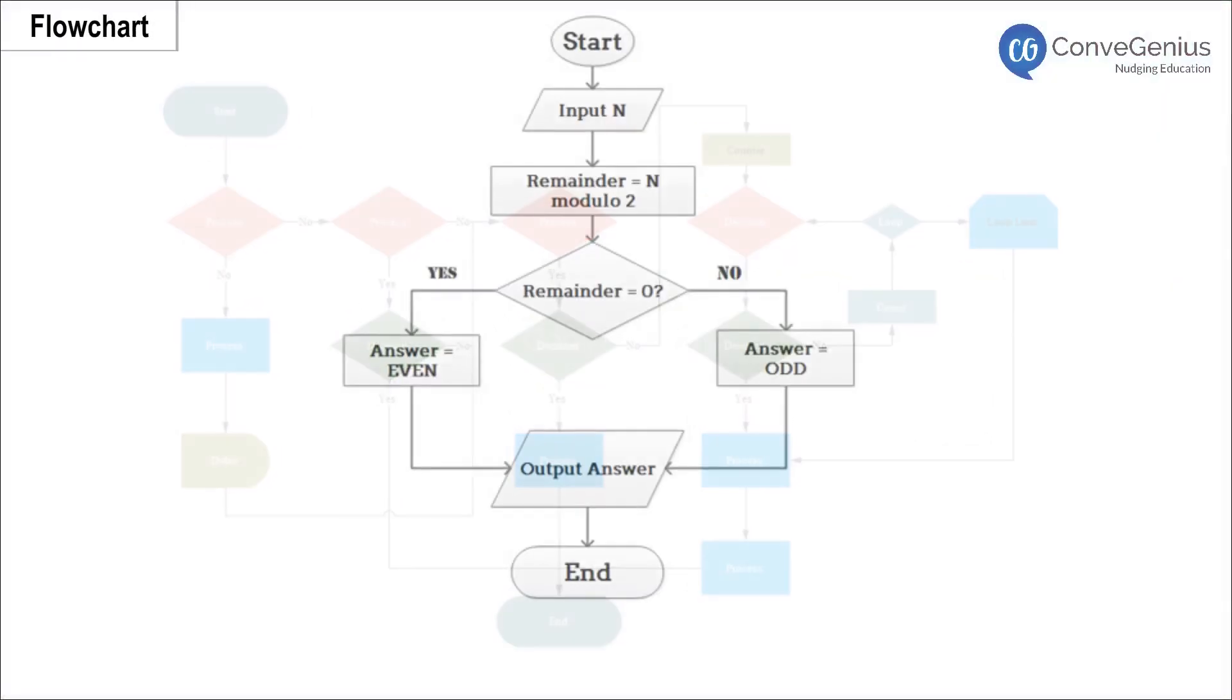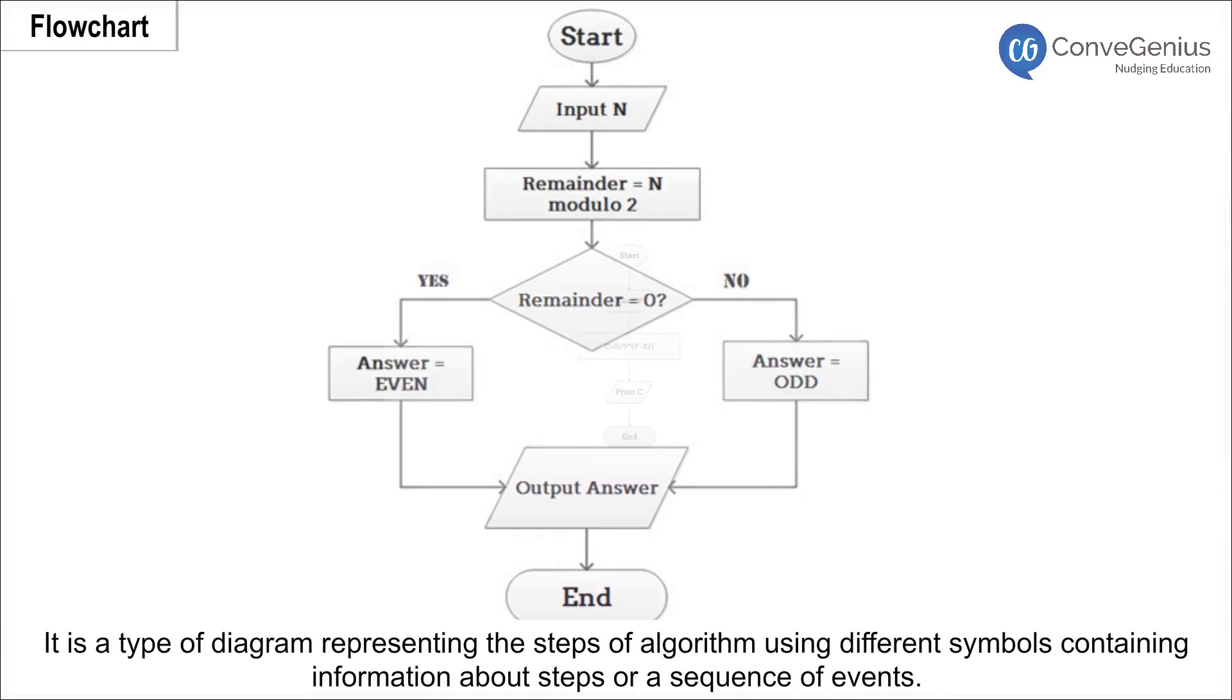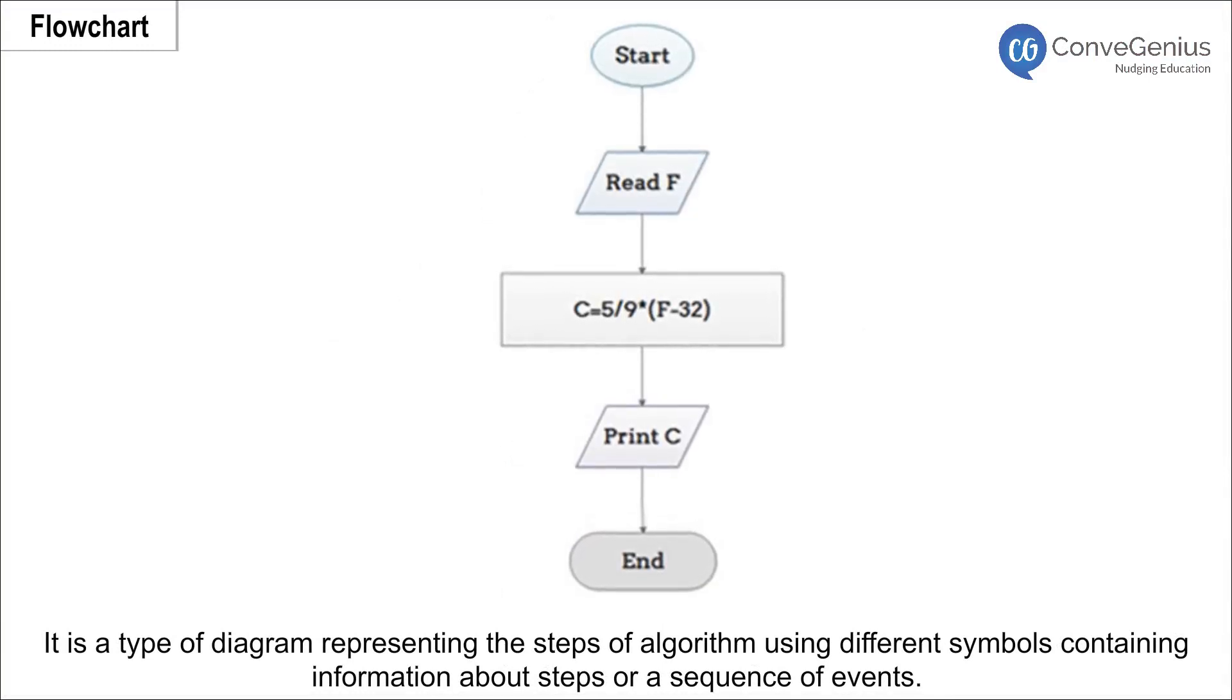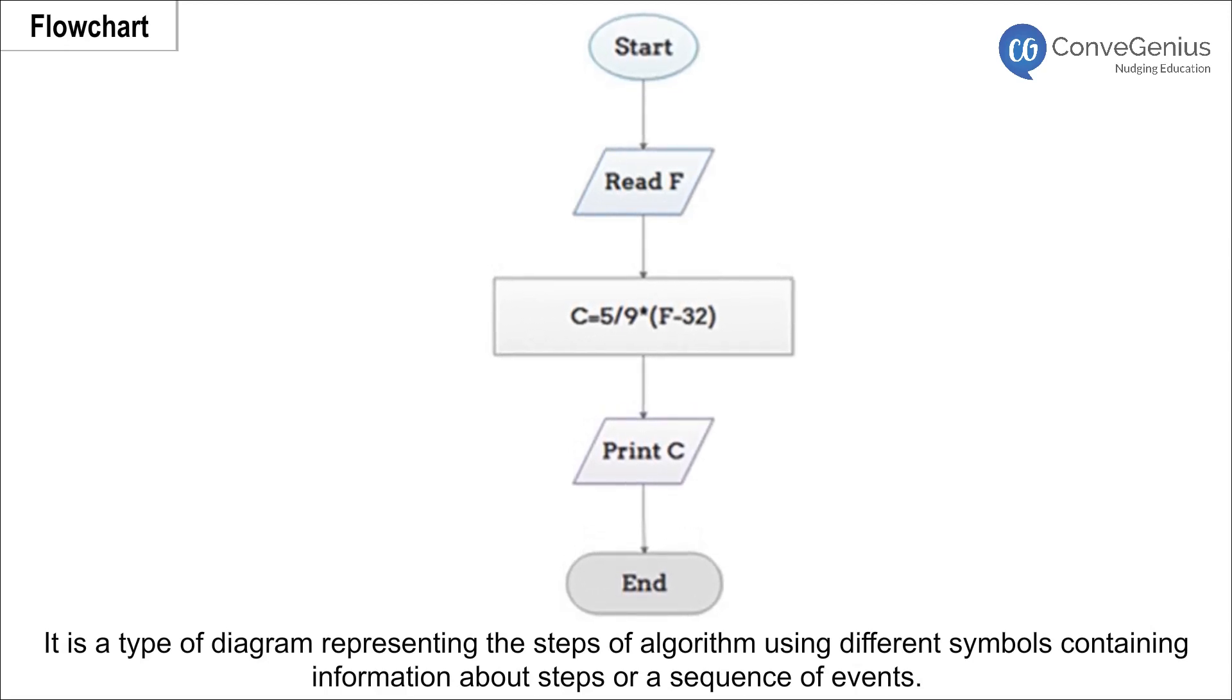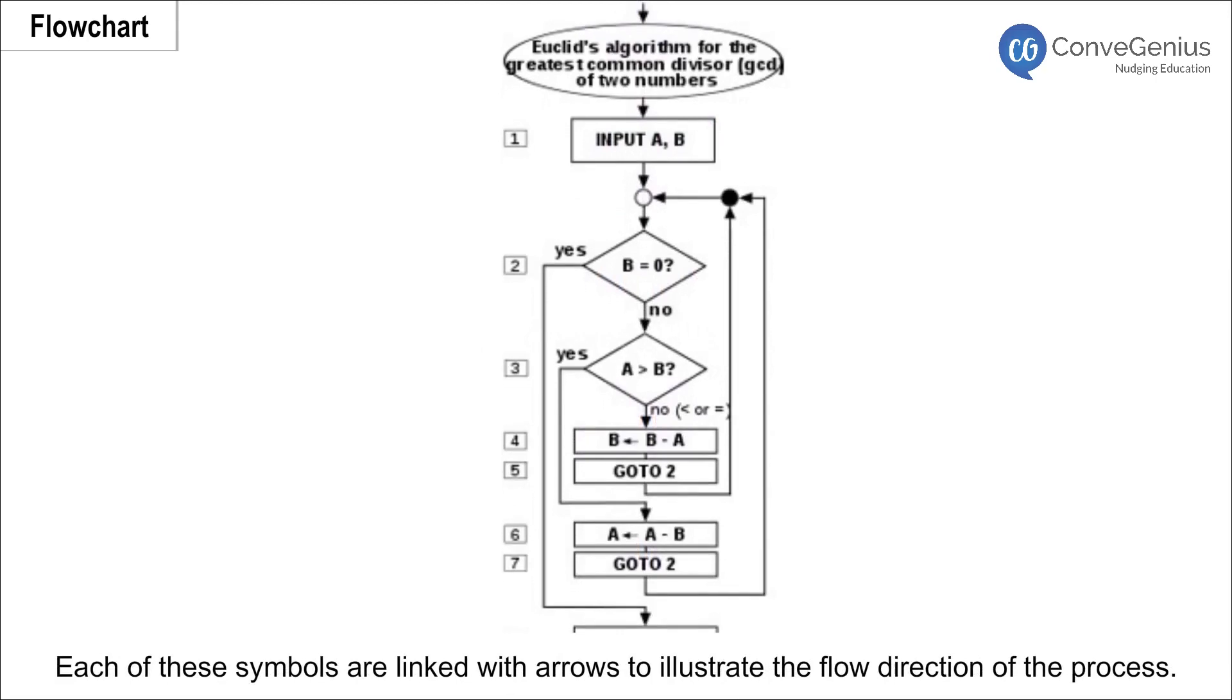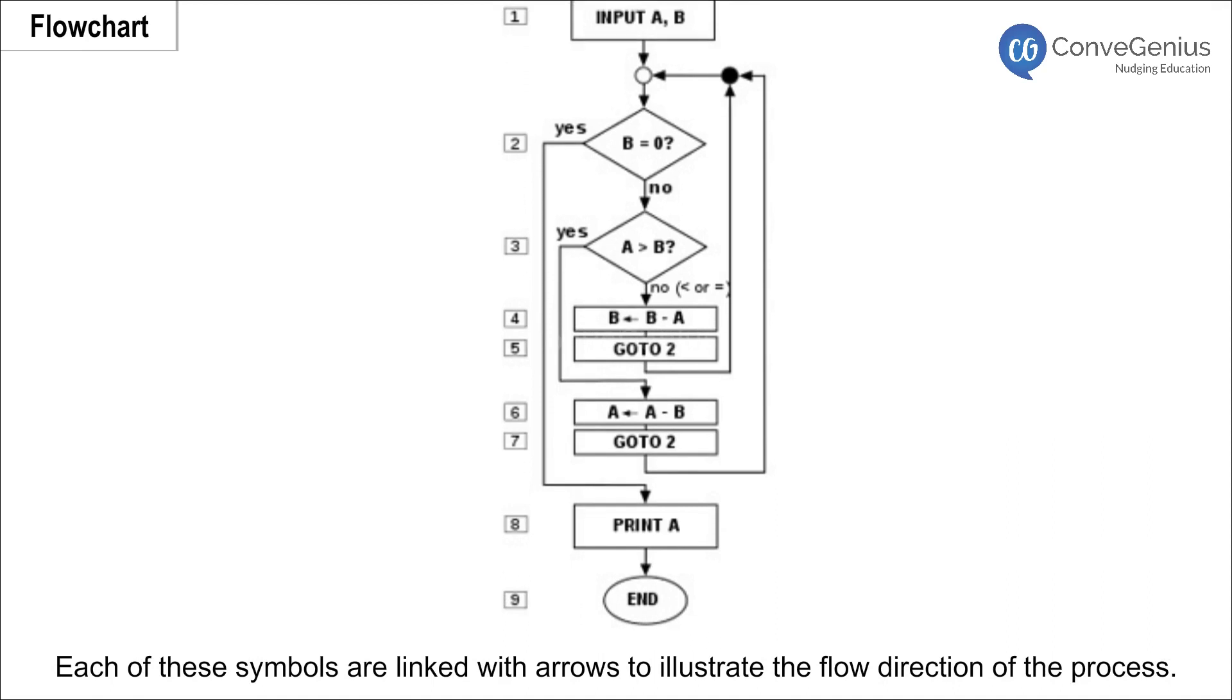Flowchart. It is a type of diagram representing the steps of algorithm using different symbols containing information about steps or a sequence of events. Each of these symbols are linked with arrows to illustrate the flow direction of the process.